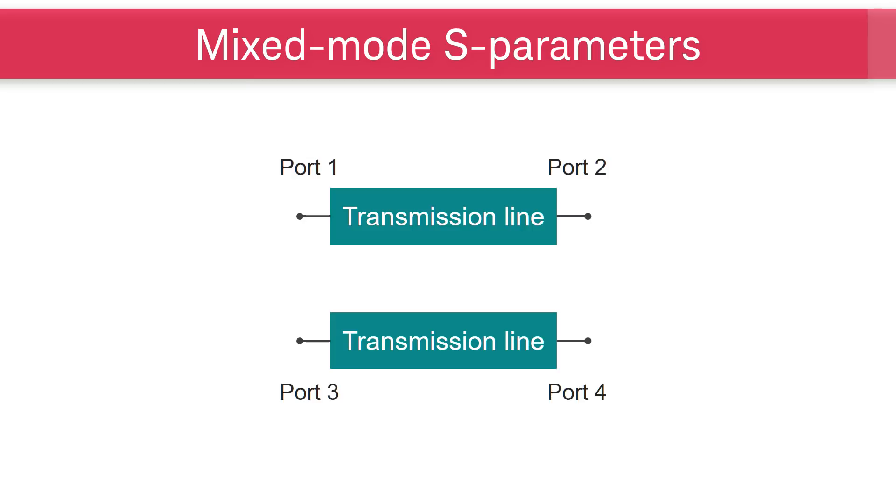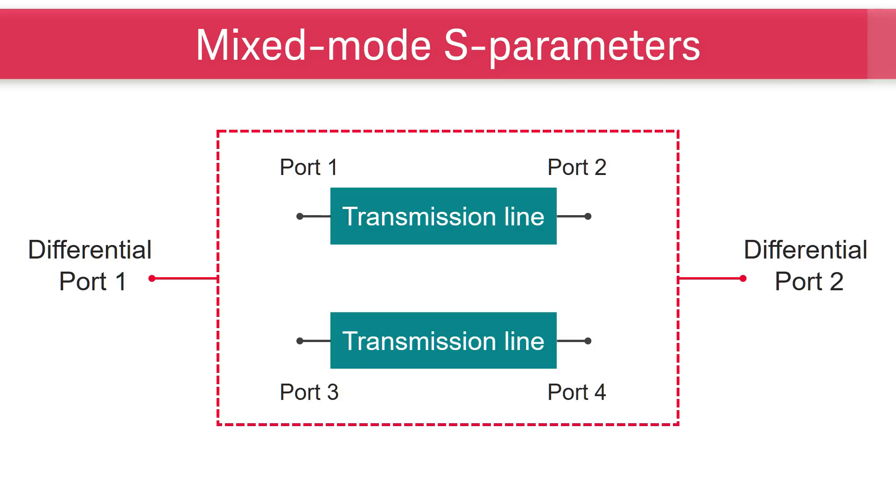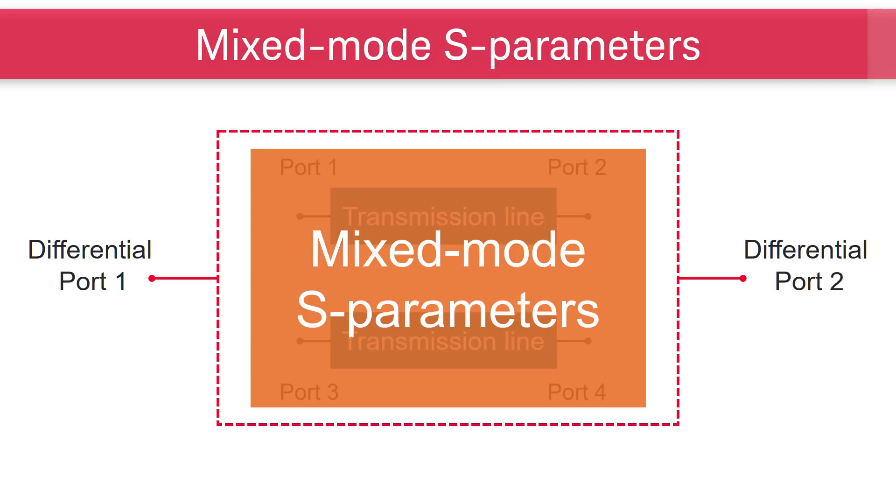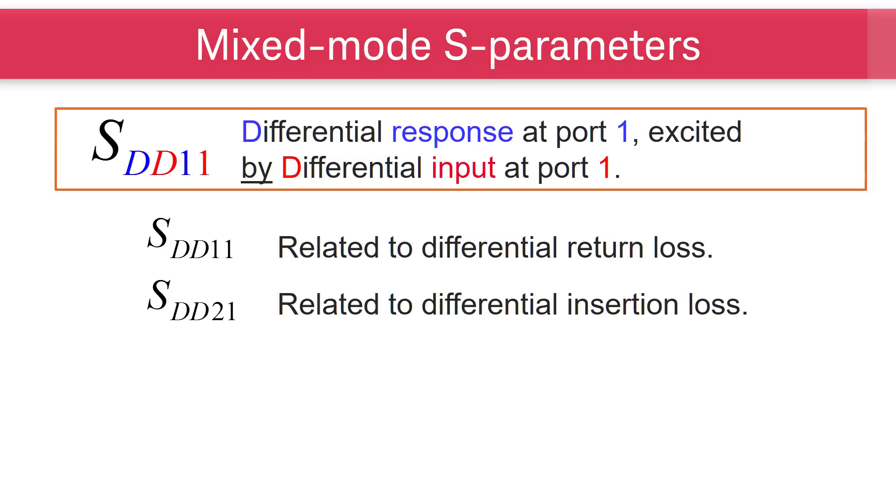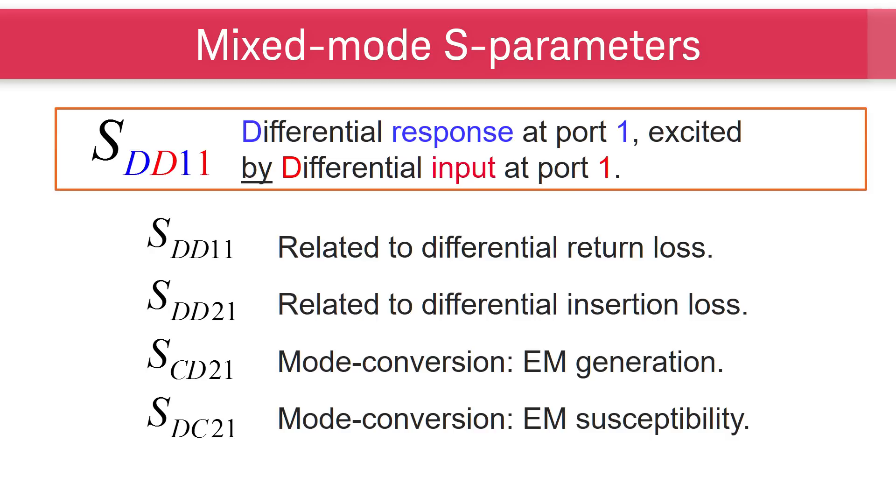When we are using a pair of transmission lines to transmit a differential signal from differential port 1 to differential port 2, mixed-mode S-parameters are used to tell us how the transmission lines react to differential and common signals. For example, SDD11 is a description of the differential response at port 1 excited by differential signal at port 1. As the DD terms give you information about differential responses, CD terms show you how much common signal is generated by differential input signals. DC terms show you how much differential signal is generated by common input signals.